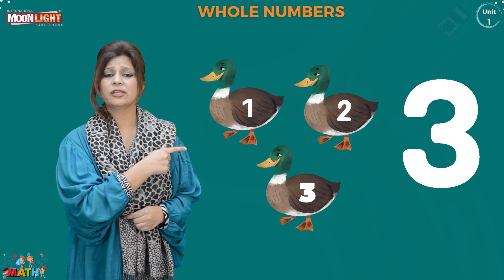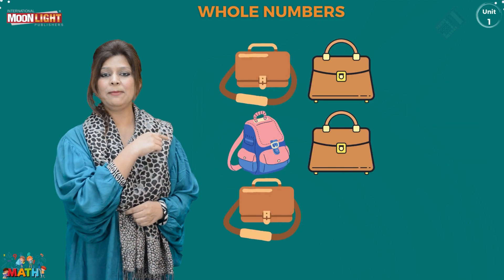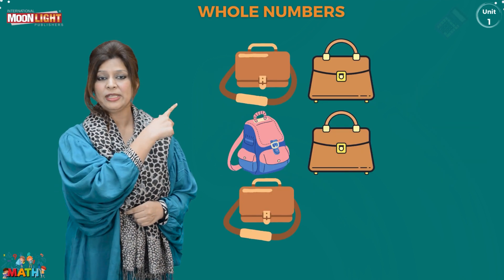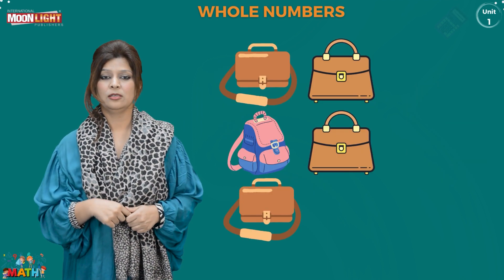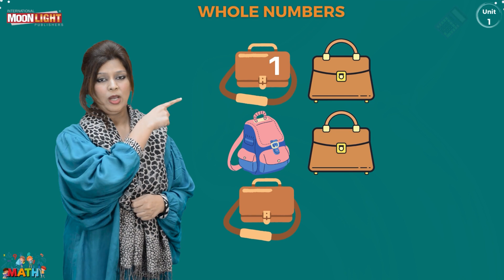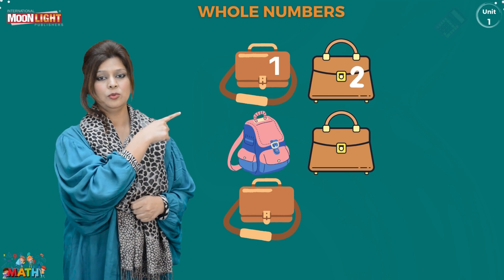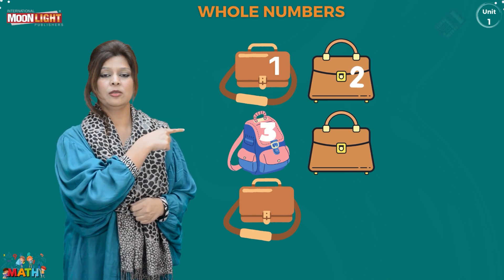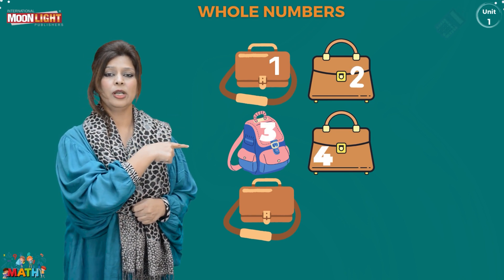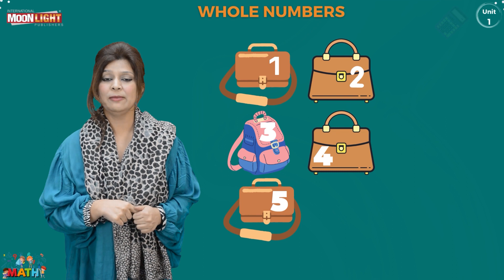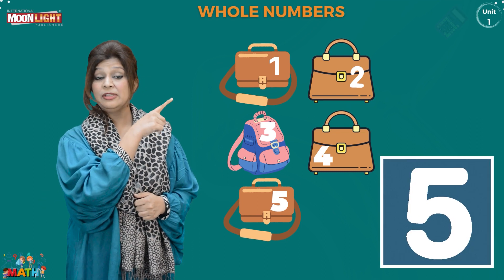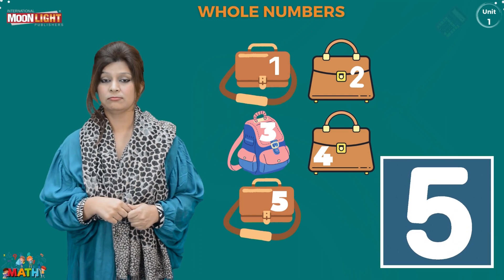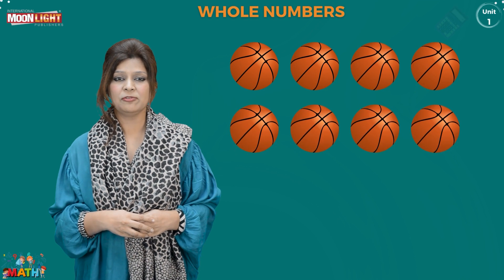How many bags can you see from this picture? How many bags are here? One, two, three, four, five. How many bags? Five! Write five in this box. Now count by yourself and tell how many balls are here.